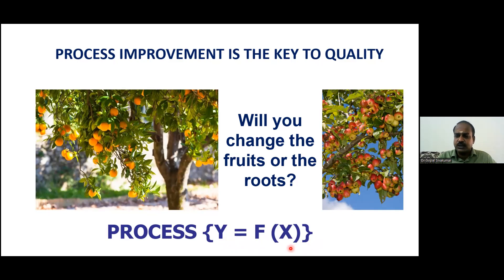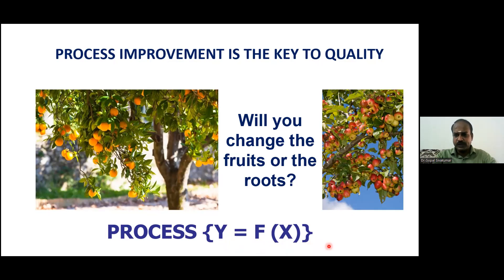You can change the sugar content to whatever amount you want, but based on the amount of sugar you add, the sweetness of the coffee changes. This is what is called Y = f(X). If you know the relationship between X and Y, you can optimize any Y variable.